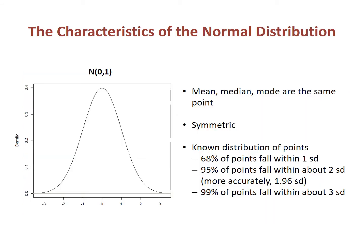The normal distribution has three characteristics. First, the mean, median, and mode are the same points. Second, the distribution is symmetrical — if one side of the curve were folded on top of the other, the shape of the left half would be the same as the right half. Finally, the distribution of the points under the curve is known, and is expressed geometrically as the area under the curve.